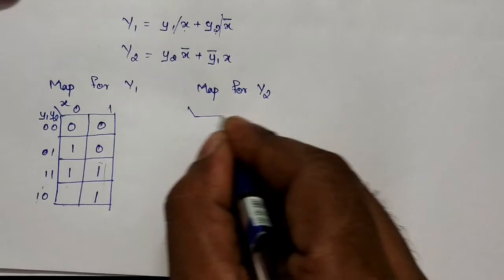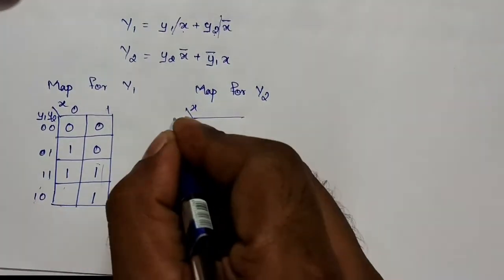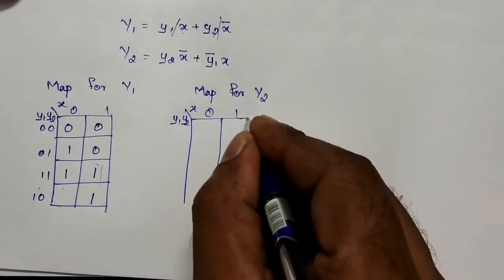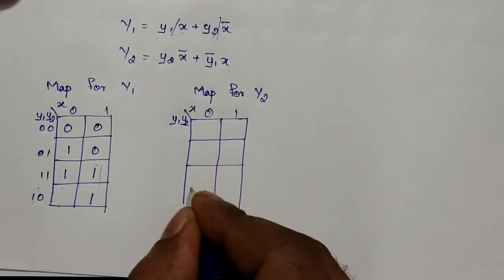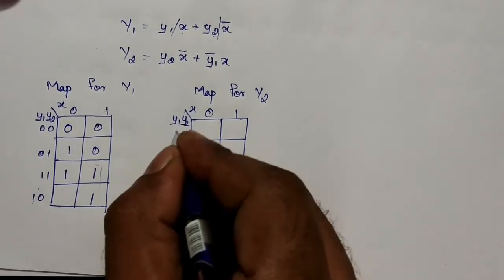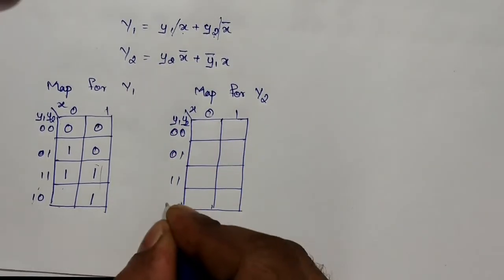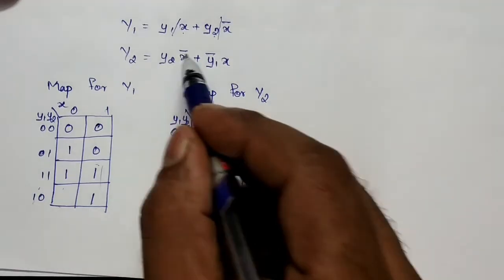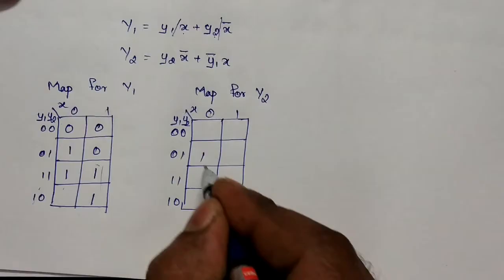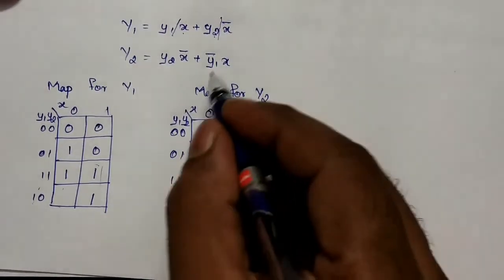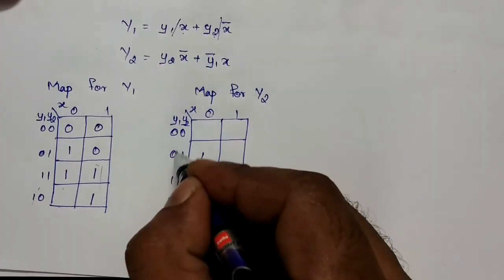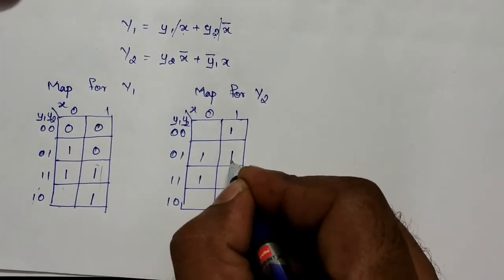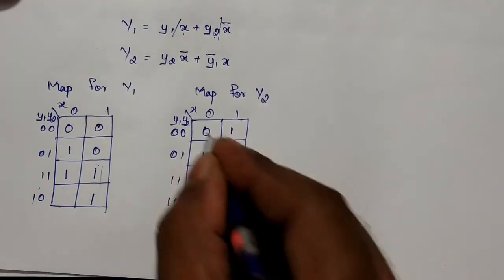Then we go for the map for Y2. Same axes: x on horizontal, y1 and y2 on vertical. The values are filled in. Using the inverse K-map: for y2·x-bar, y2 is common so those two rows get value 1 where x = 0. For y1-bar·x, y1-bar selects those two rows and x selects the column, so those two intersection places get value 1. Remaining values are marked as 0.